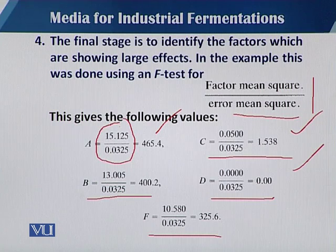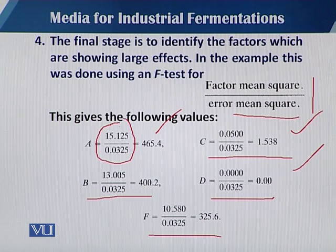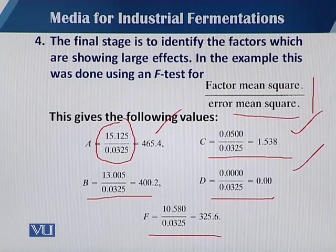By this Plackett-Burman design with five different variables and two dummy variables, we found that variables A, B, and F are very significant because they have very high F values: 465.4 for A, 400 for B, and 325.6 for F.